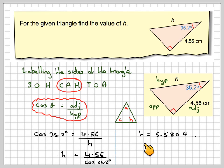So h will be equal to 4.56 divided by cos of 35.2 degrees. On my calculator, making sure I'm in degree mode, h will be equal to 5.5804. And correct to 2 significant figures, that's going to be 5.58 centimeters.